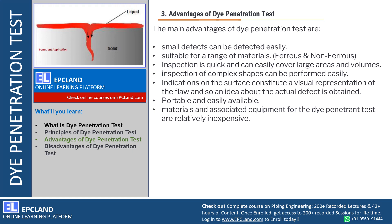Indications on the surface provide a visual representation of the flaw and the actual defect. Once we apply the penetrant and capillary action occurs, we can visually identify the defect on the surface. The application equipment is portable, and materials and associated equipment for Dye Penetration Test are inexpensive. It is very easy to apply, inexpensive, portable, and capable of identifying complex shapes visually.